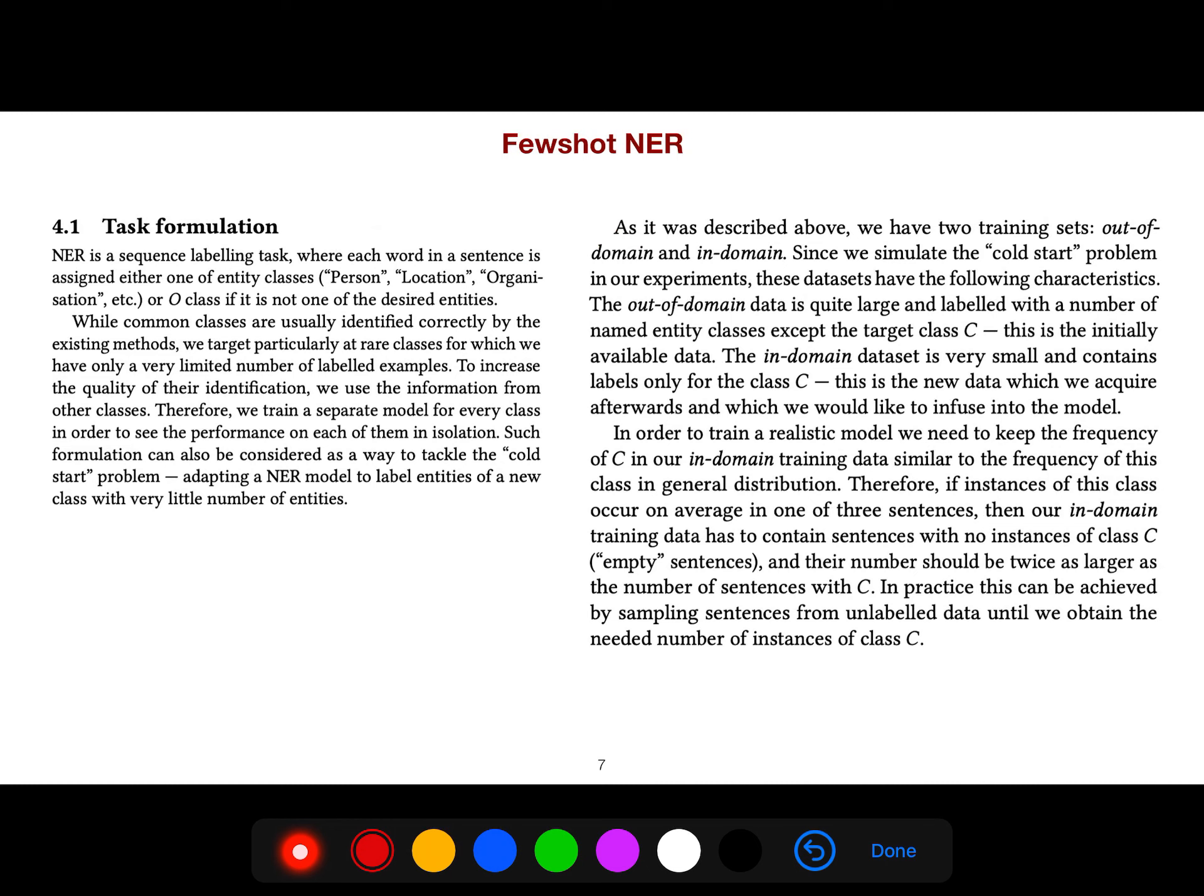While common classes are usually identified correctly for existing methods, they target particularly rare classes for which they have only a very limited number of labeled examples. To increase the quality of their identification, they use information from other classes. Therefore they train a separate model for every class to see the performance of each in isolation.